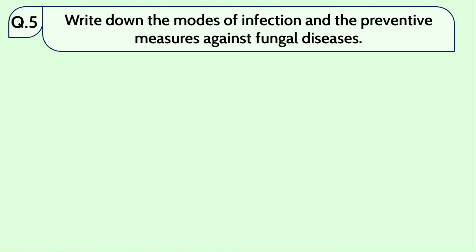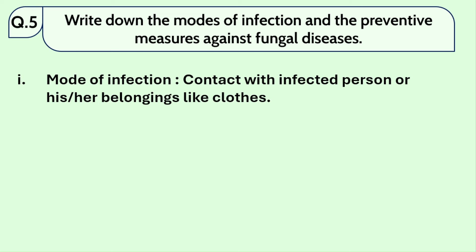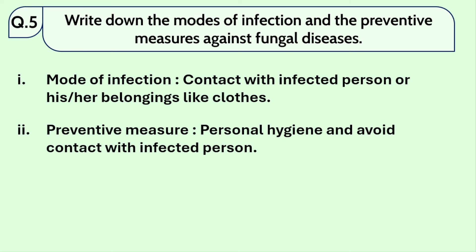Question number 5: write down the modes of infection and preventive measures. Mode of infection: contact with an infected person or their belongings like clothes, comb, or any object the infected person has touched. If someone else touches those objects they will also be infected. Preventive measure: maintain personal hygiene and avoid contact with the infected person.